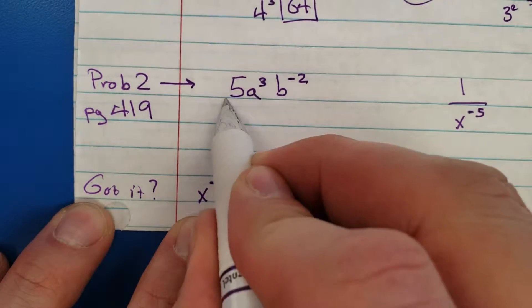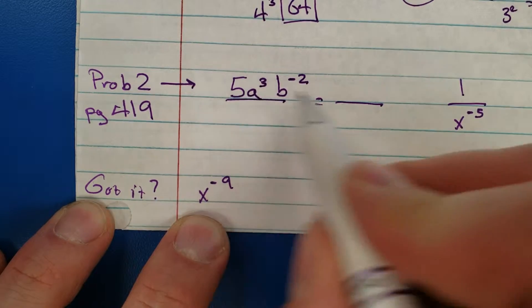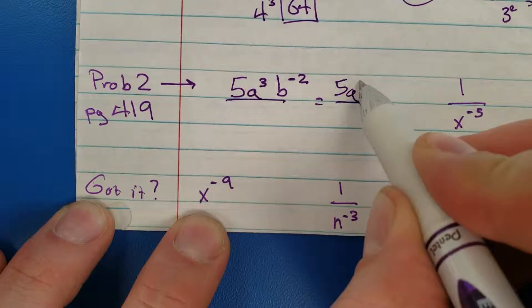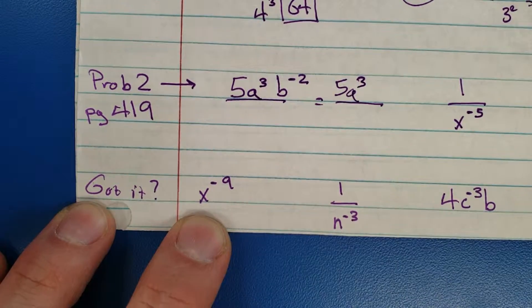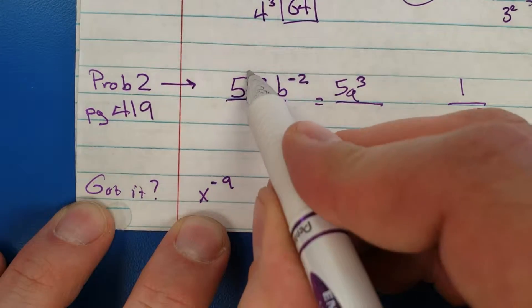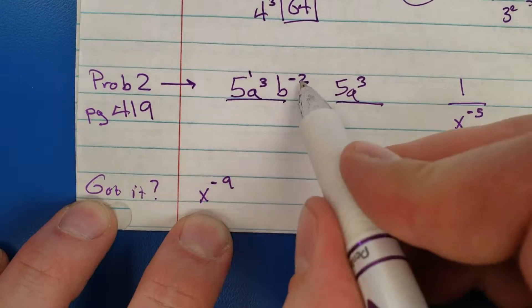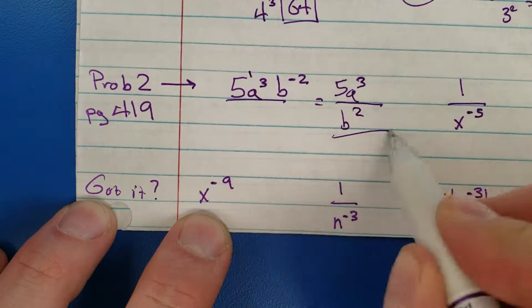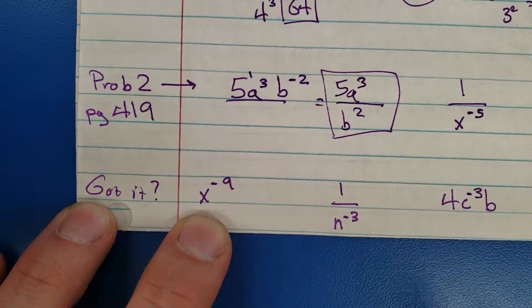Follow the rules. Here we go. I like to start with a blank fraction bar. If you're positive you stay. The 5a and the three stay positive. Technically there's a positive one right there, so it stays put. The b to the negative two, sorry, you got to move down here. Done. That's it, that's all you have to do.